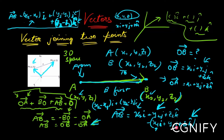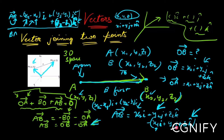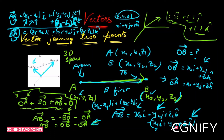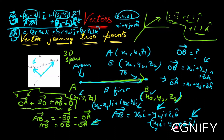Remember: if you are going from A to B, take B first then subtract A. If you are going from B to A, take A first, giving (x1−x2)·i + (y1−y2)·j + (z1−z2)·k. With this we complete the topic — vector joining two points. Just subtract the coordinates in the correct order, attach i, j, k, and that's your vector.